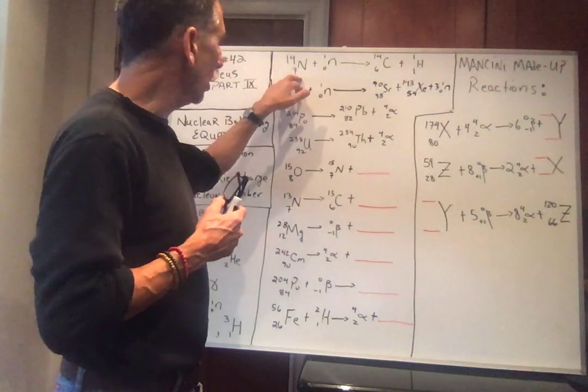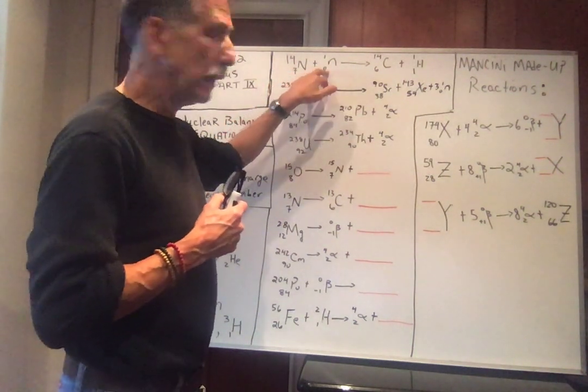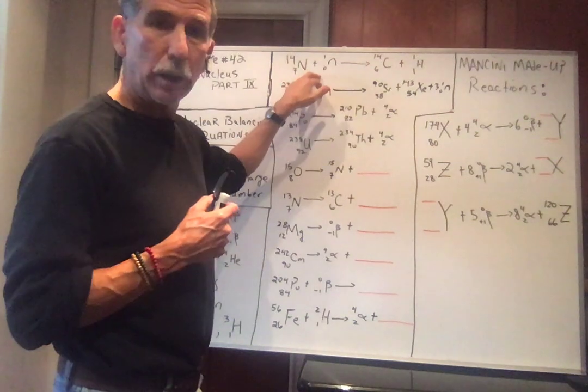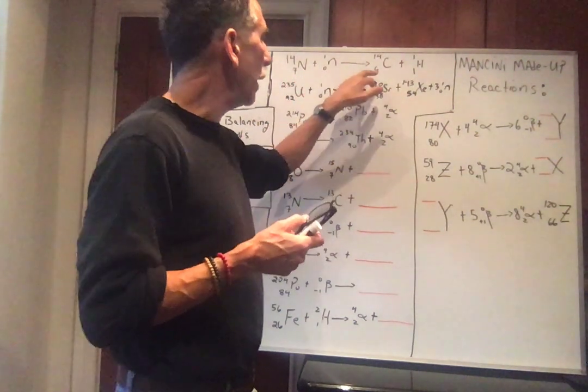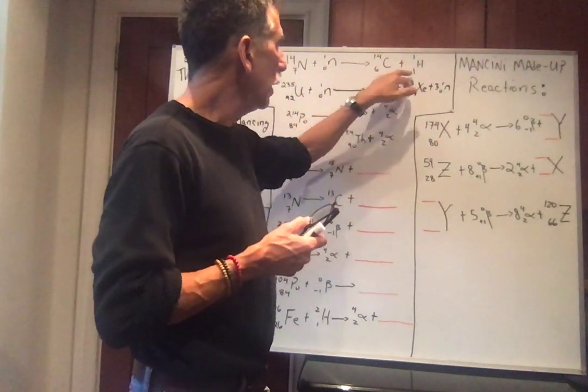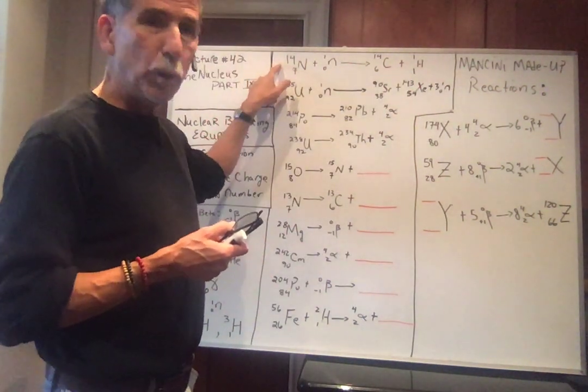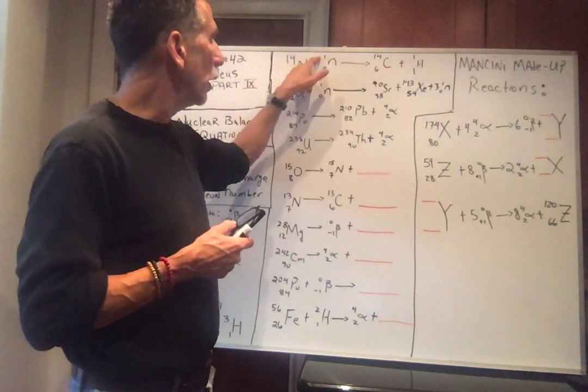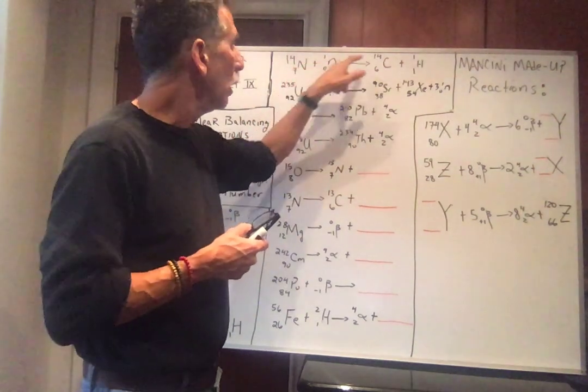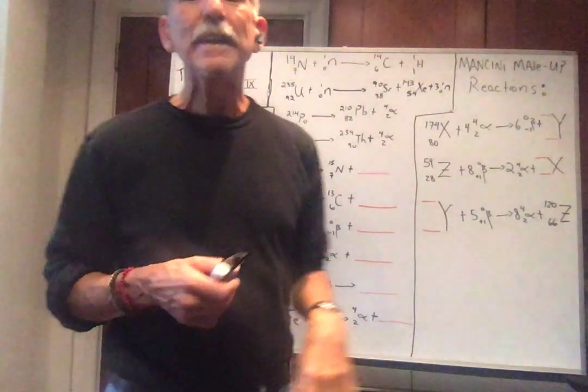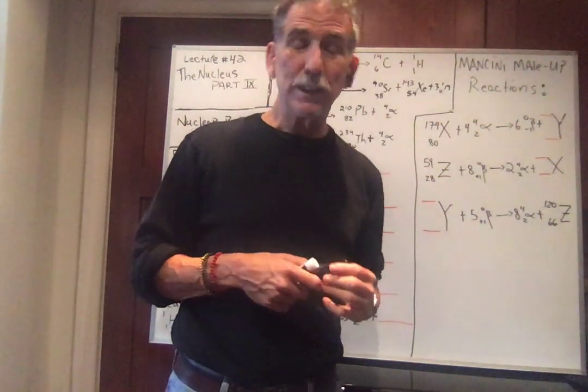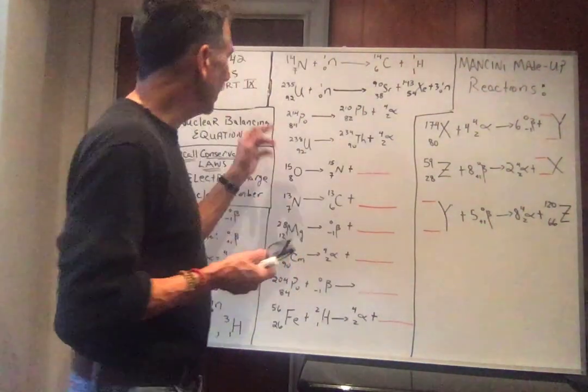Let's look at the electric charge. We have a charge of seven, zero. So the total charge on the left-hand side, seven. What do we have here? We have the carbon, six, and one is seven, so that's good. Up here, 14 nucleons. One nucleon makes 15 nucleons. 14 plus one is 15. It's balanced. Isn't that hard?